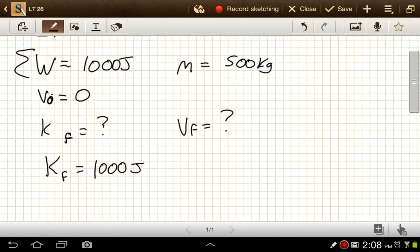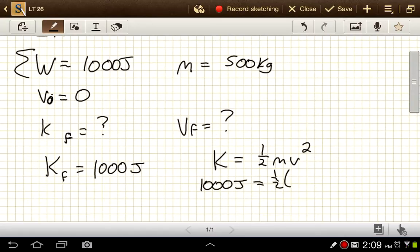They might ask us then to go on and find out what the final velocity would be for this situation. So there we know that K is equal to one-half mv squared. K here is 1,000 joules, is equal to one-half times 500 kilograms times v squared.